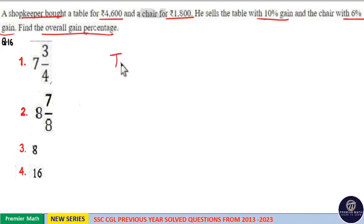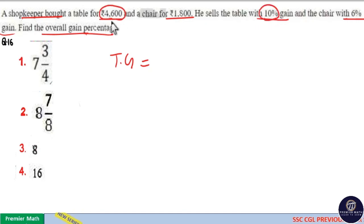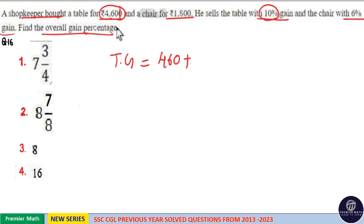Here, total gain. Total gain is equal to 10% on this $4,600. 100% of $4,600 is $4,600. 10% is equal to $460. So, $460 plus...